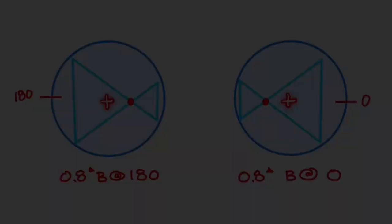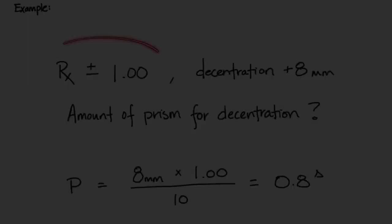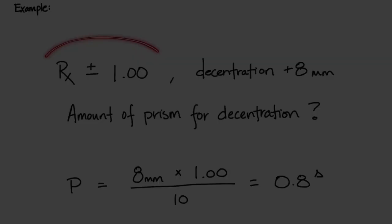And so that's it. That's how you calculate prism and determine base direction for prism for decentration. Two things I want to point out. If the lens has cylinder power, you have to find the prism in the decentration meridian.